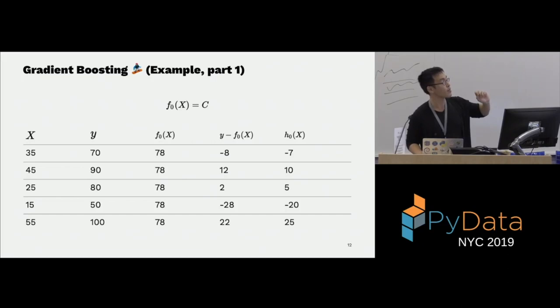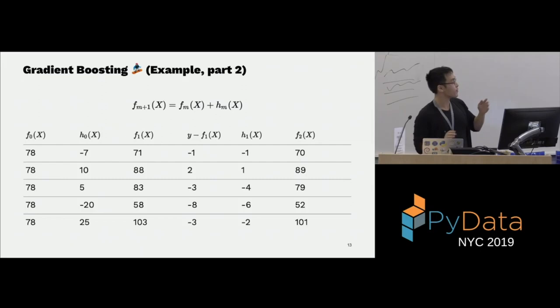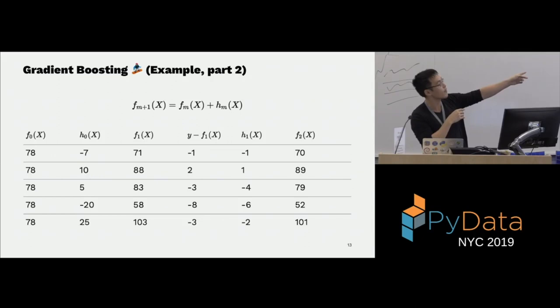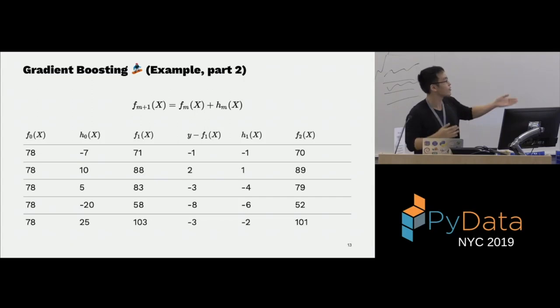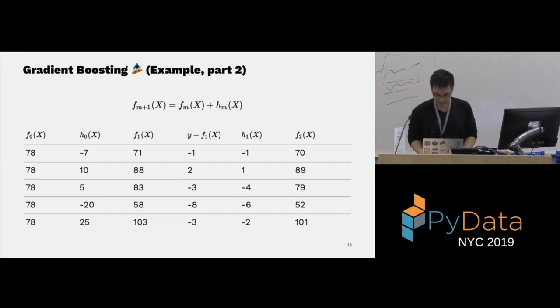This is the first learner. We can do this over again — the expression is recursive. We add F(0) and H(0) to get the next prediction, then take the difference again. Now the difference is smaller. We do this recursively — compute H(1), H(2) — and just keep going. This is the boosting process.